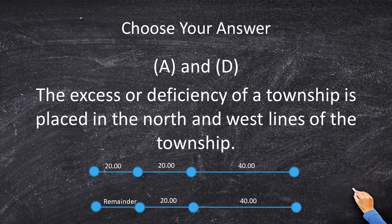Those are the sections where the deficiency or excess will be placed. Understanding the question — where does the excess or deficiency go? — the correct answer choices are A and D: the north and the west of the township.